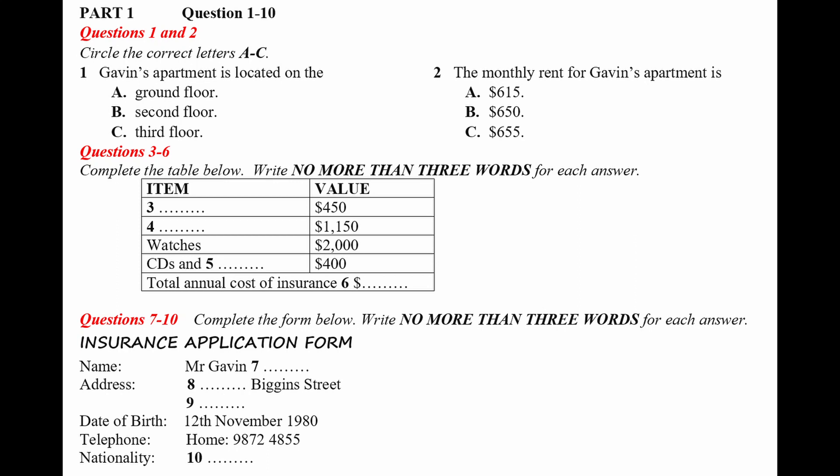Part 1. Gavin, a newly arrived student, wants to insure the contents of his apartment. He calls an insurance agent to ask for information. First, you have some time to look at questions 1 to 6.